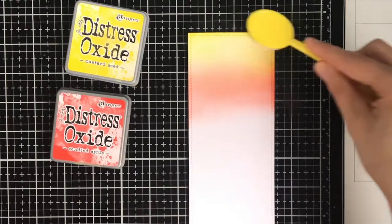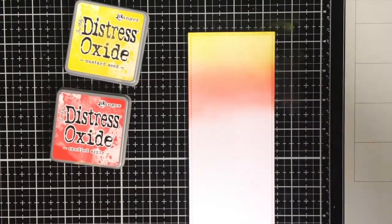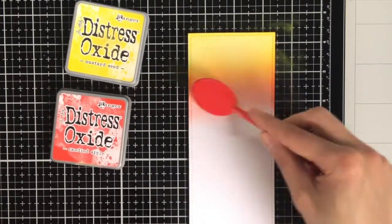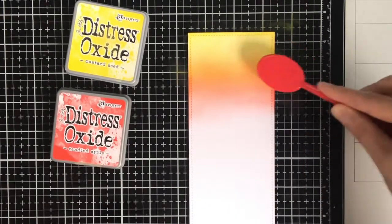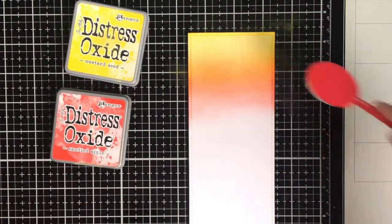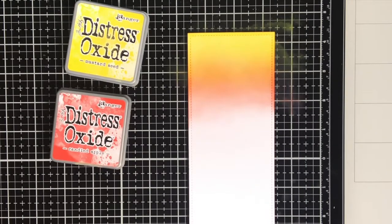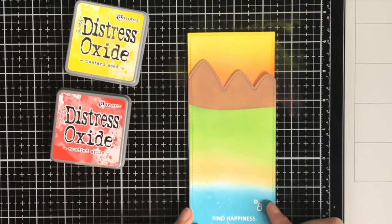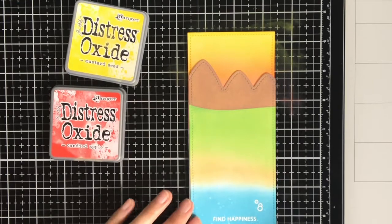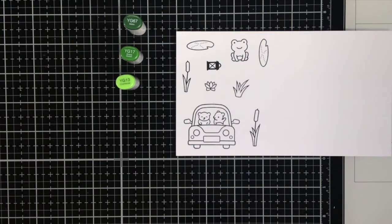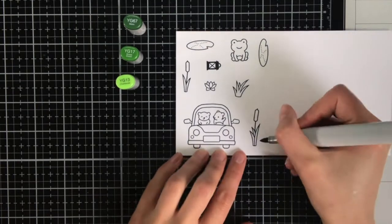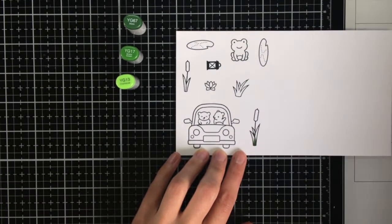So instead of actually using a yellow, orange and red, you can also just use two colors and blend them together and it will create a new one. And this is also something that I really love about the oxide inks. They're really easy to blend together and they create these beautiful colors. Now I am happy with my ink blended background and also how it looks against those mountains, so we can start with the Copic coloring.